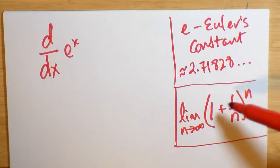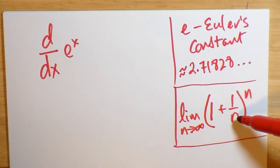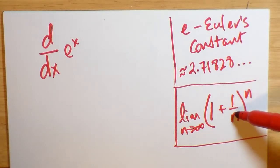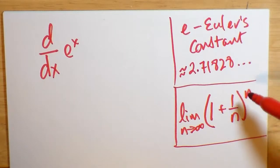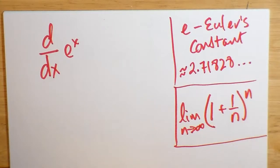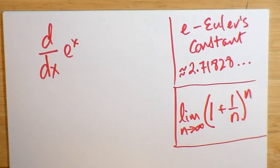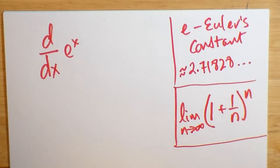Now, one would think that, you know, if you look at that limit, n is going to infinity, causing 1 over n to go to 0. So shouldn't this boil down to nothing more than 1 to the power of infinity, which ought to be 1?